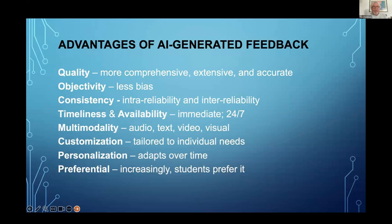For a number of reasons, these are some of the advantages of AI-generated feedback over human-generated feedback. I think the quality is better — it's more comprehensive, extensive, and more accurate. When I see the type of feedback that AI gives, I'm always impressed. It's also, I think, more objective. There's less bias in it than with human-generated feedback, and it's more consistent with intra-rater reliability and inter-rater reliability.